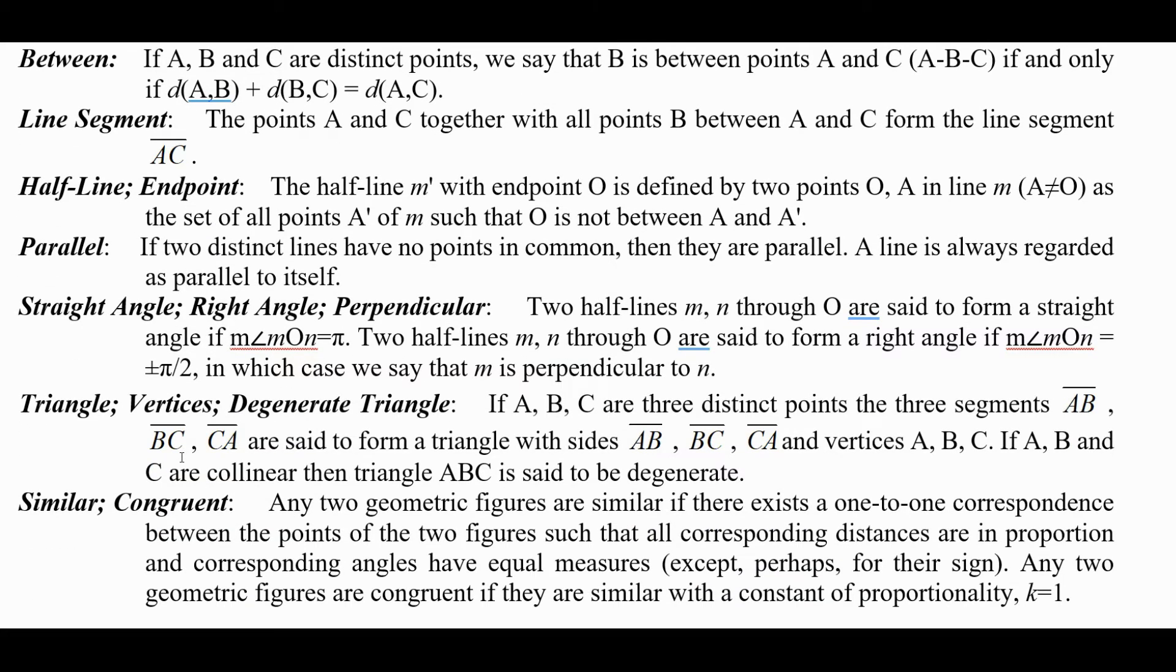A straight angle, a right angle, and perpendicular: two half-lines M, N through O are said to form a straight angle if the measure of M-O-N is π. Two half-lines form a right angle if the measure is ±π/2, in which case we say that M is perpendicular to N.